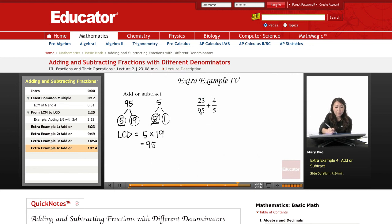So for this fraction here, since the denominator is already 95, I don't have to change it, so this one can stay as it is. This one, however, I have to change that 5 to make it a 95 so they will have a common denominator.